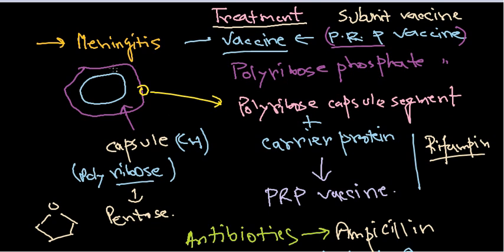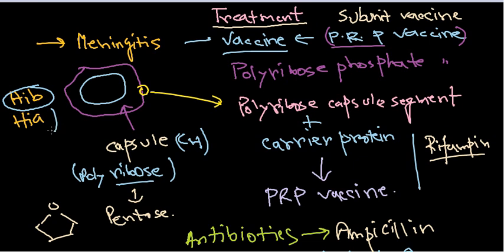The capsular part is one of the most important virulence factors of the bacterial cell. Depending on the chemical nature of the capsule, different strains vary. Haemophilus influenzae type B (HIB) is the type that usually causes meningitis. The capsular segment from type B is taken to prepare the HIB vaccine.